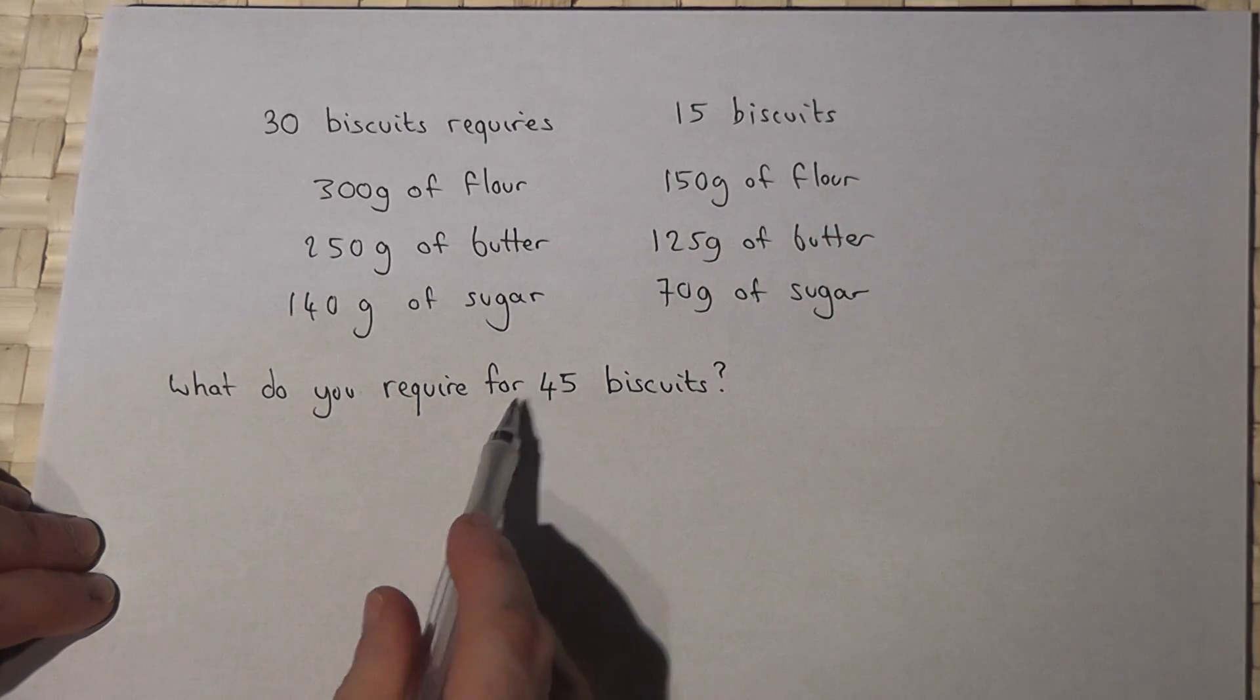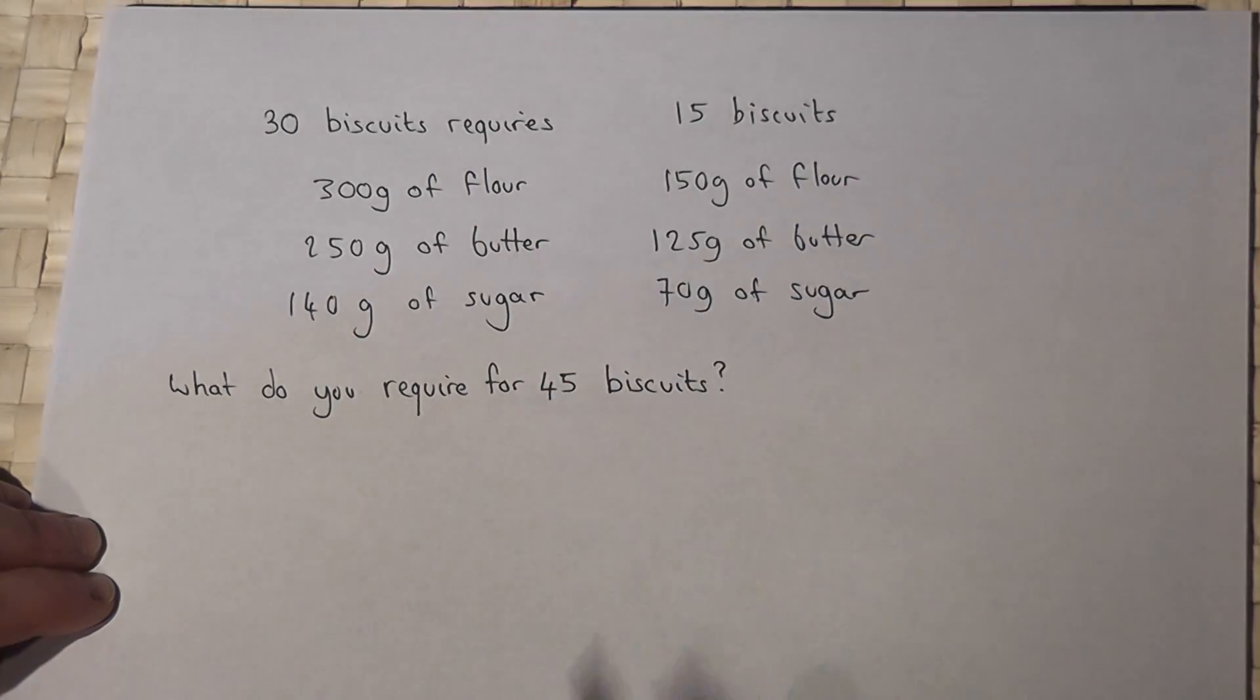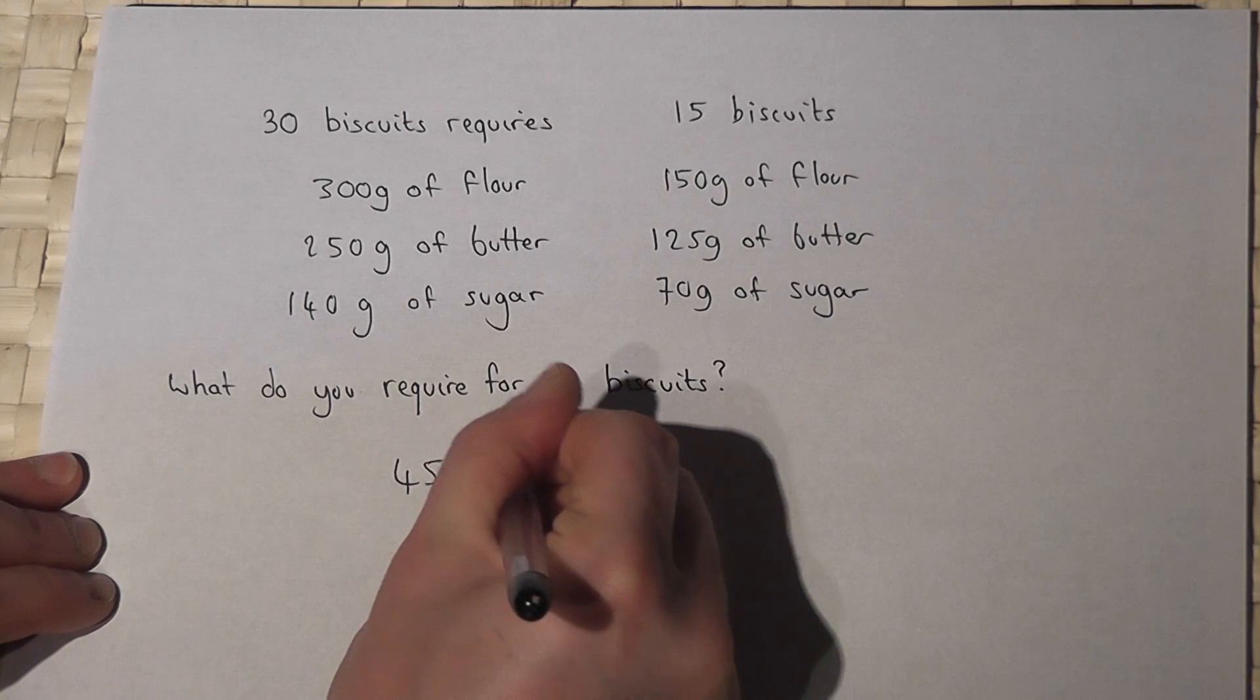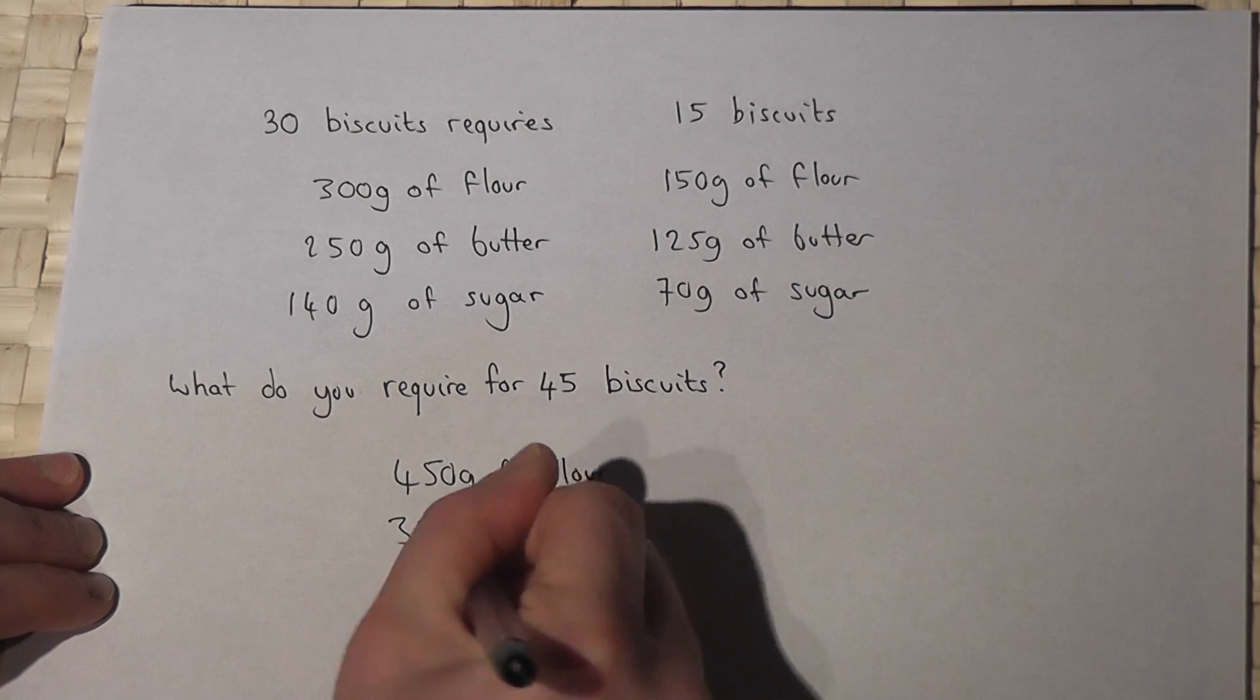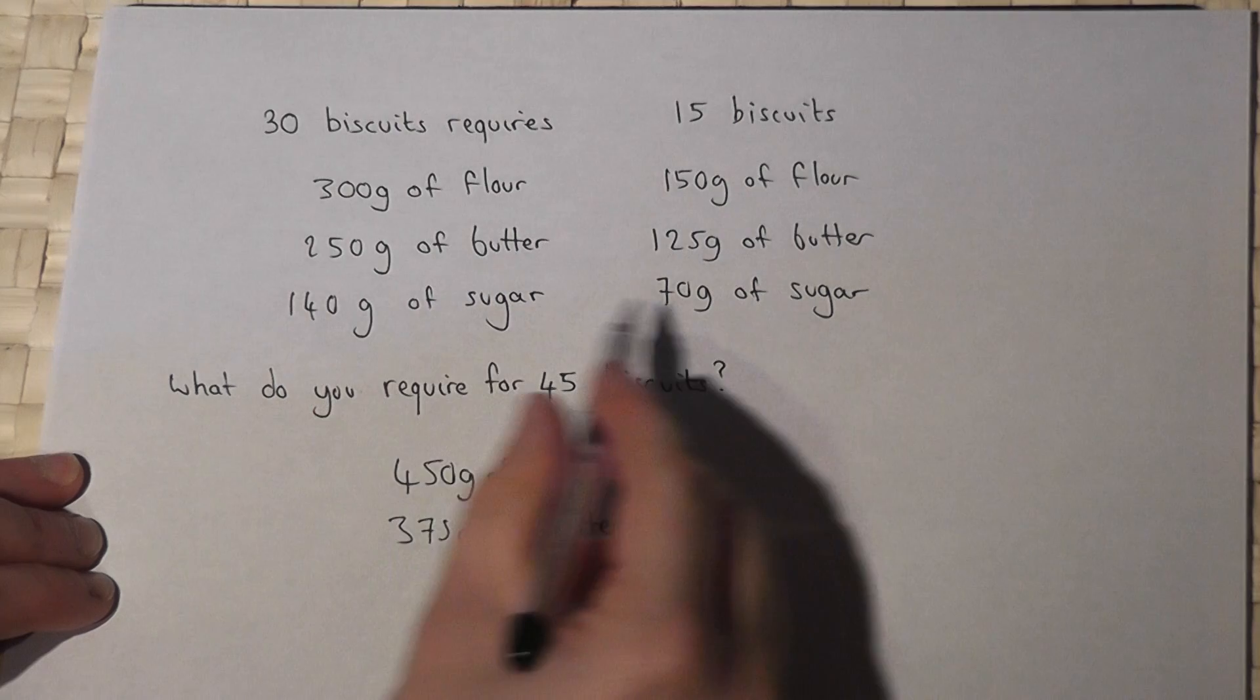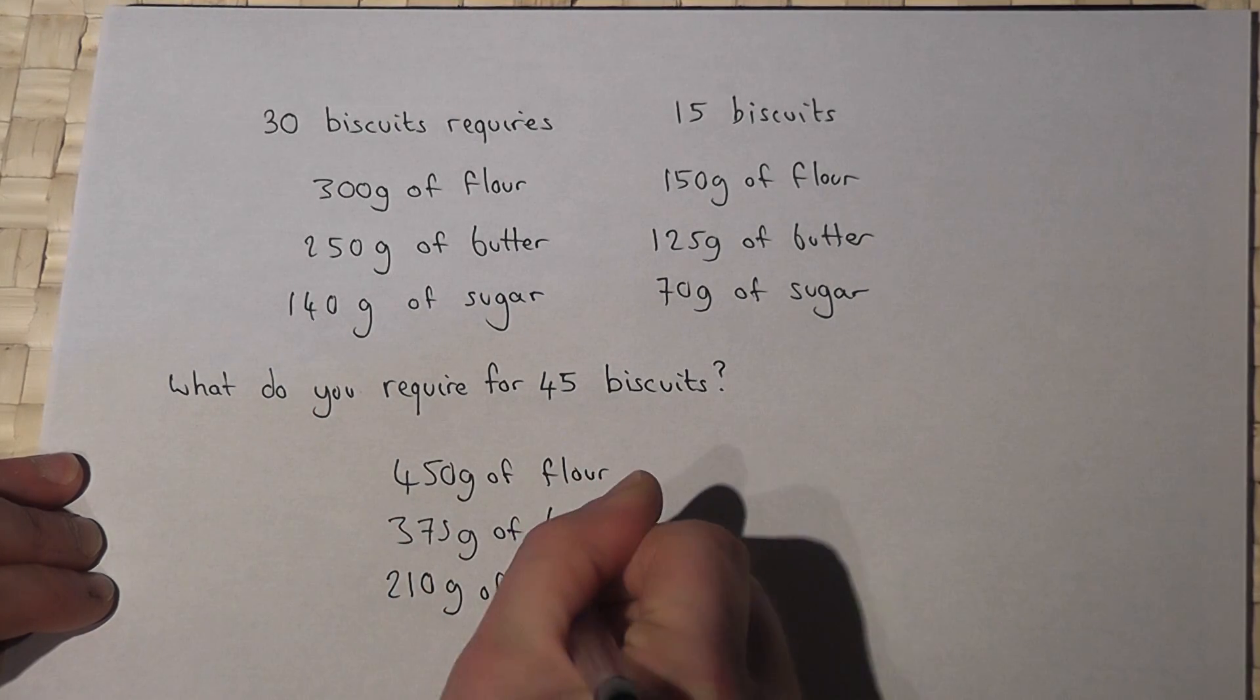So to make 45 will be 300 plus 150, so 450 grams of flour. 250 plus 125 is 375 grams of butter, and 140 plus 70, 250 grams of sugar.